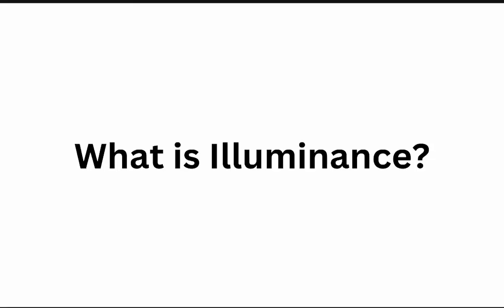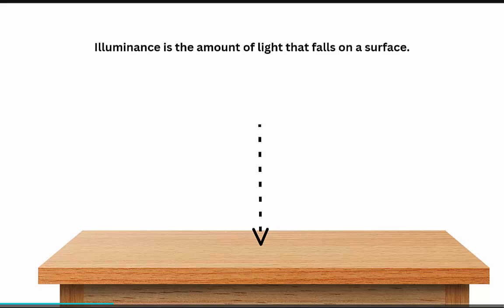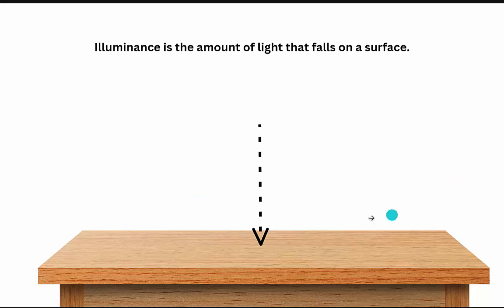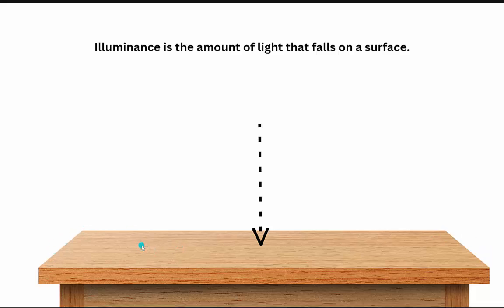What is illuminance? Illuminance is the amount of light that is falling on a surface. Here I have considered a table, and the table top is my surface. The amount of light falling on the table surface is the illuminance. Illuminance is measured in lux — when I talk about lux levels, I'm actually talking about illuminance.